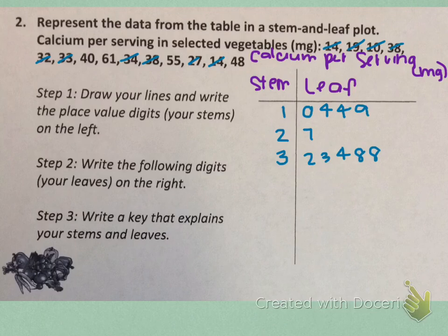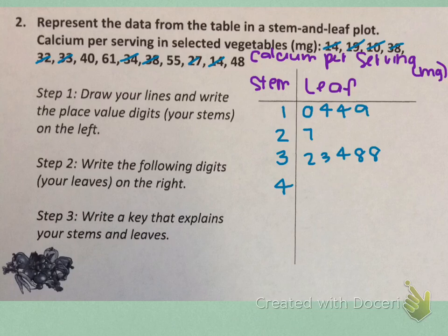The next tens digit that I see is four for forty. So we need to list all the leaves that belong with the stem four. Go ahead and pause to do that, and then press play to check. The leaves that I got for my four stem were zero and eight. So now I would like for you to go ahead and finish the stem and leaf plot on your own and then press play to check.